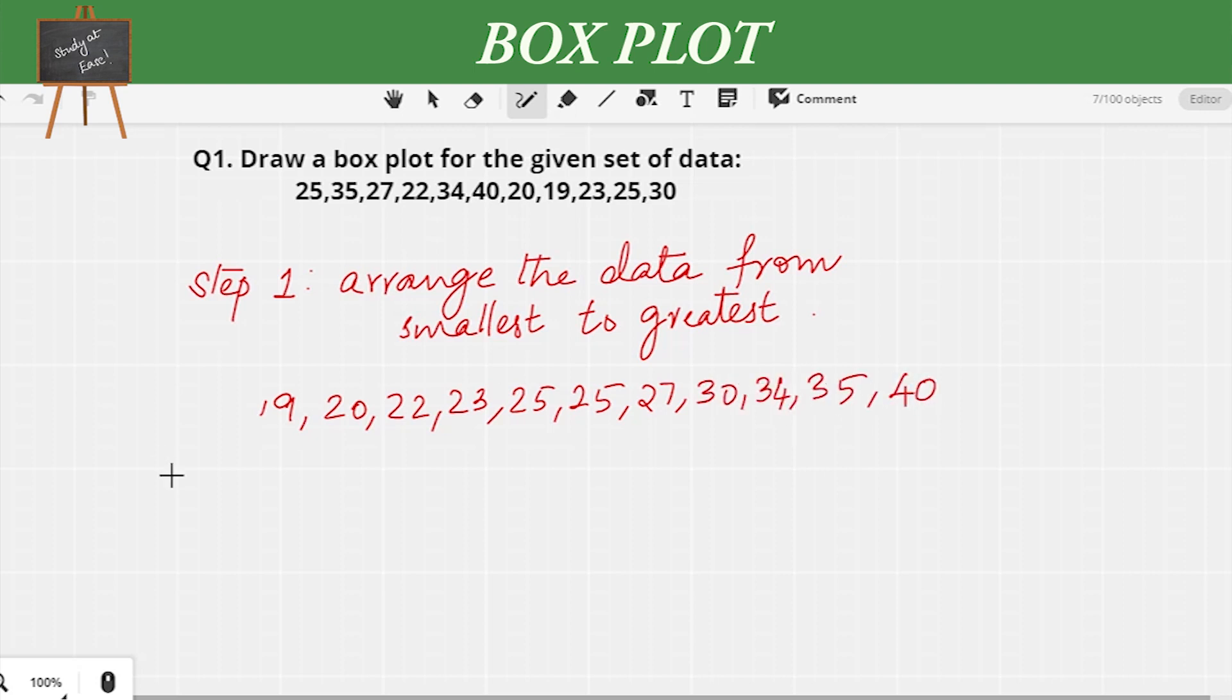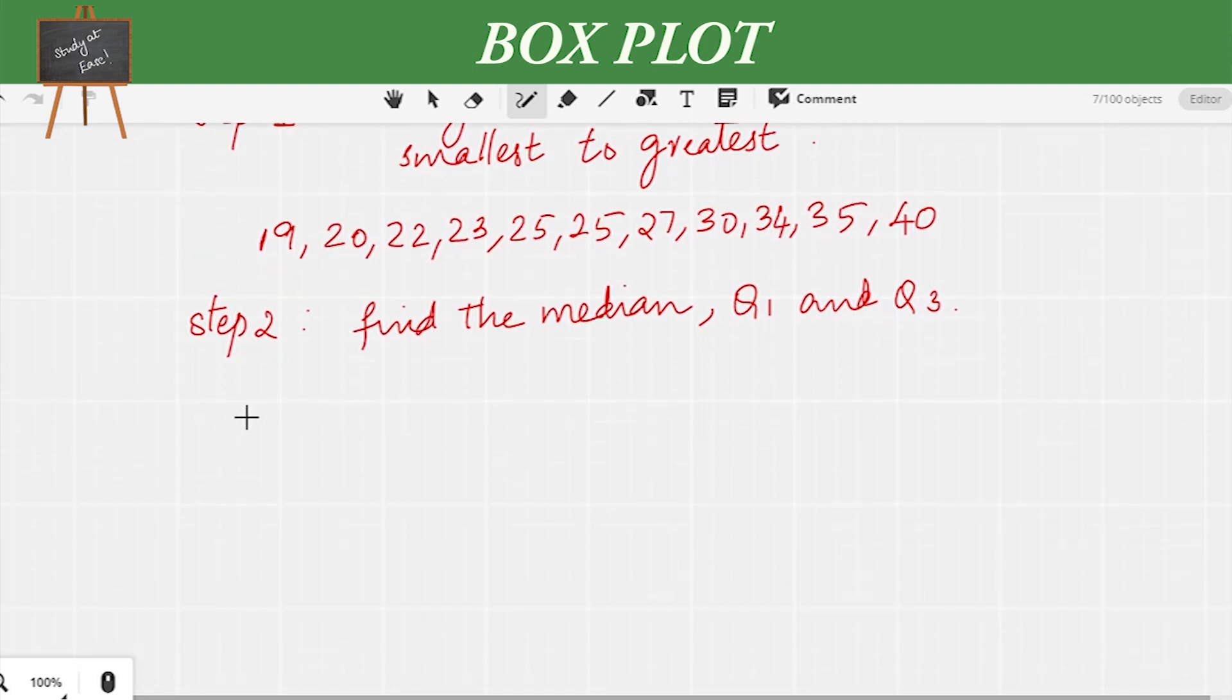Step 2: Find the median, Q1, and Q3. We write the numbers again: 19, 20, 22, 23, 25, 25, 27, 30, 34, 35, and 40. To find the median, we start marking numbers from the two ends. Finally, we arrive at the number in the center, which is the median. Here we reach 25.